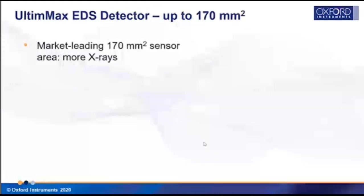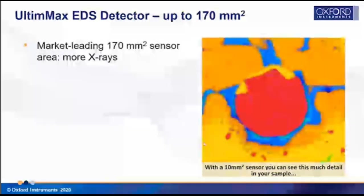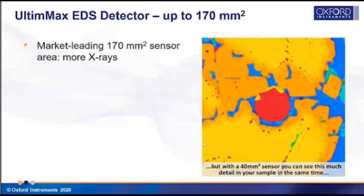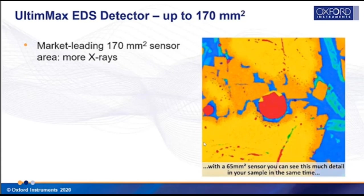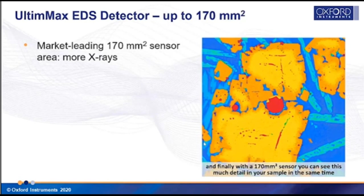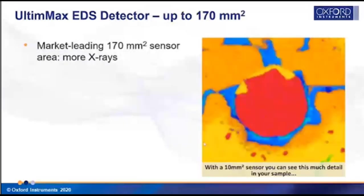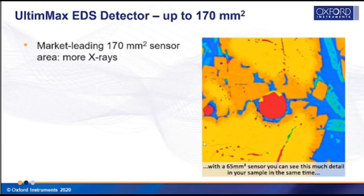Nowadays we have a further evolution in SDD technology with very large sensor sizes, even faster speeds, and Peltier cooling. Our latest EDS detector is the Ultim Max, which has a market-leading sensor size of up to 170 square millimeters. The benefit of a large sensor is the amount of X-rays collected compared to smaller sensors. Scaling from 10 mm² to 40 mm² to 65 mm² and ultimately to 170 mm² means we can analyze a much larger area with the same beam current and in the same time — a dramatic advantage in microanalytical throughput.